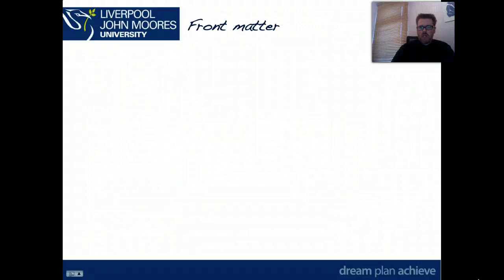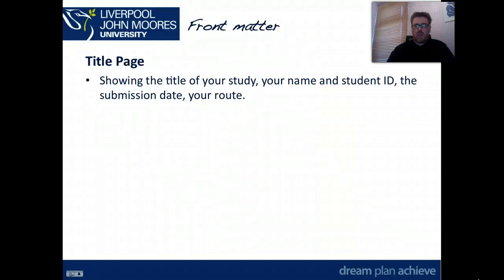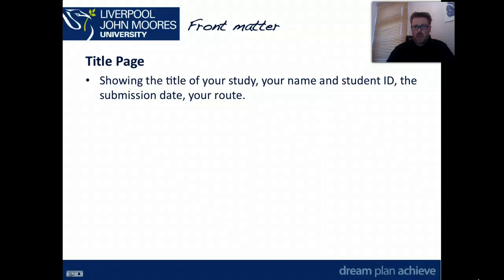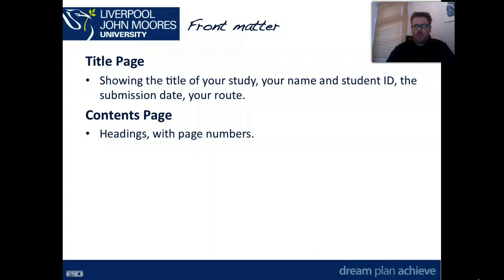So the front matter — that's the bits at the beginning of your assignment — starts with the title page. On your title page you should have the component name and module code with component two identified, the title of your study which could be your research question, your name, your student ID — this isn't an anonymous marked assignment — the submission date, your route, and you should also identify your route leader that the assignments are being submitted to. Your contents page should have the headings you've chosen for structuring your essay with the page numbers, and that should be a separate page.